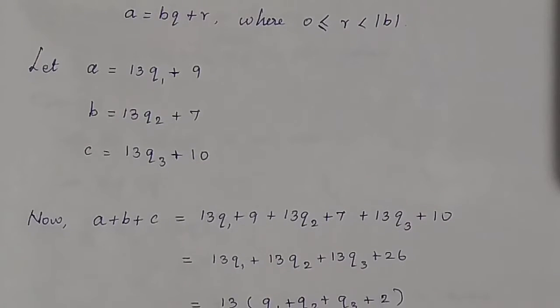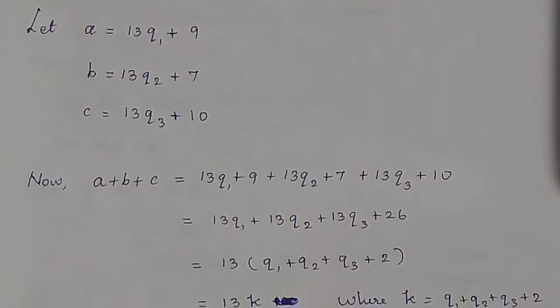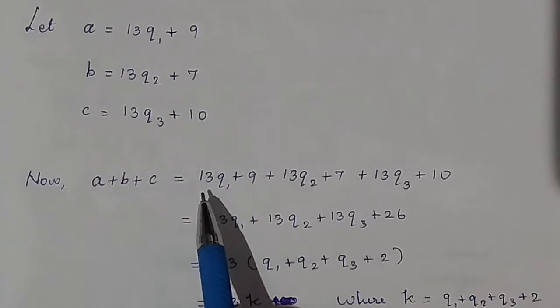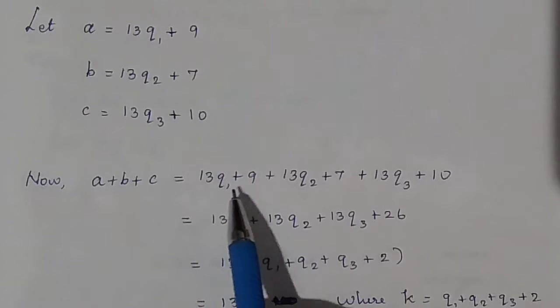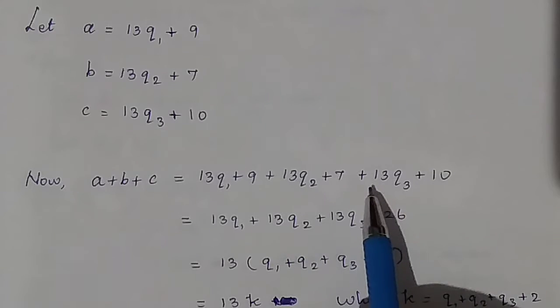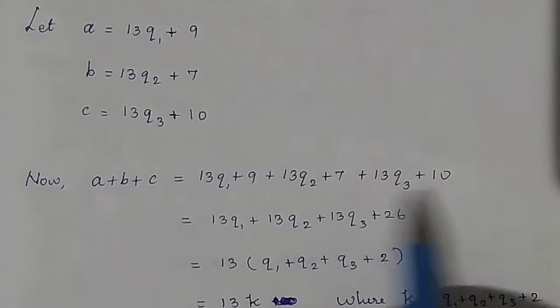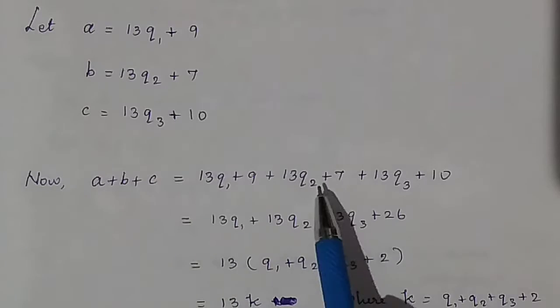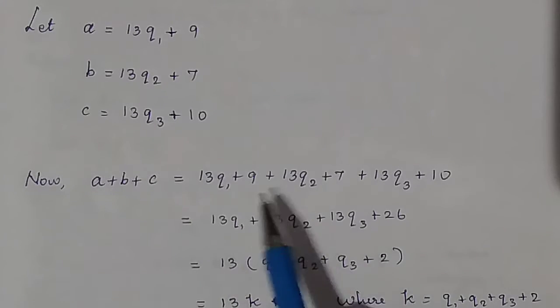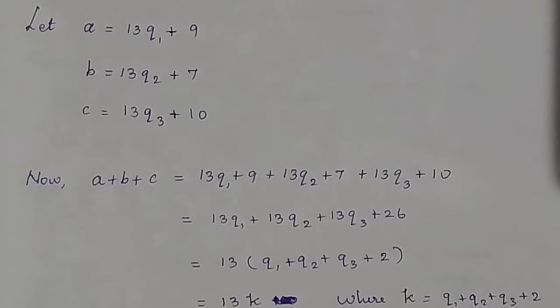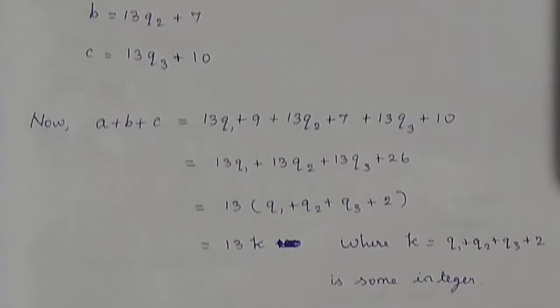Now, a plus b plus c equals 13q1 plus 9 plus 13q2 plus 7 plus 13q3 plus 10. So 13q1 plus 13q2 plus 13q3 plus 9 plus 7 plus 10 equals 26.